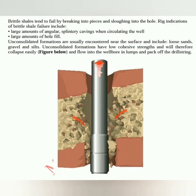Large amounts of hole fill. Unconsolidated formations are usually encountered near the surface and include loose sands, gravel, and silts. Unconsolidated formations have low cohesive strengths and will therefore collapse easily, as shown in the figure below, and flow into the wellbore in lumps and pack off the drill string.